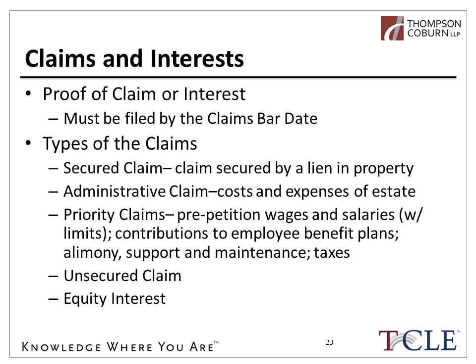Administrative expense claims are treated outside of the claims process — these are the actual and necessary expenses of administering a bankruptcy case, treated at the highest level of priority. Ordinary course administrative claims are paid in the ordinary course. There are certain favored parties that Congress has decided to treat with special priority — called priority claims. It's no surprise that taxes are included, as the government will want to get their money first. Other priority groups include employees — their wages, salaries, and benefits — and certain support obligations.